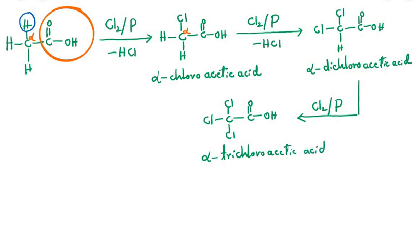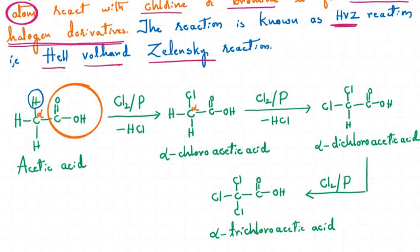To summarize: an aliphatic carboxylic acid must have at least one alpha hydrogen to give the Hell-Volhard-Zelinski reaction. In alpha-dichloroacetic acid the alpha position has two chlorines, and in alpha-trichloroacetic acid the alpha position has three chlorines — both positions are labeled 'alpha'.